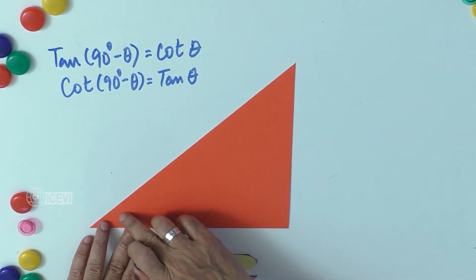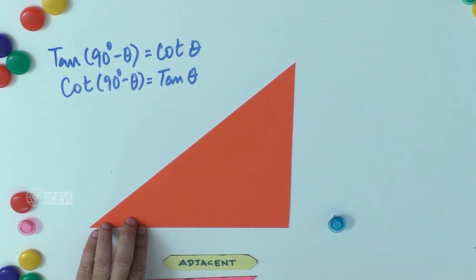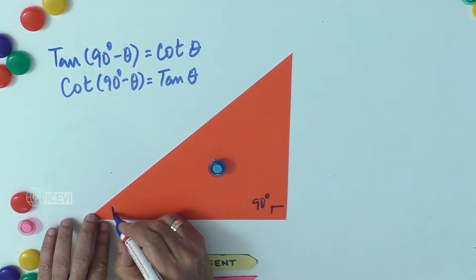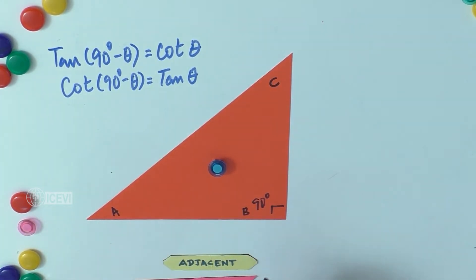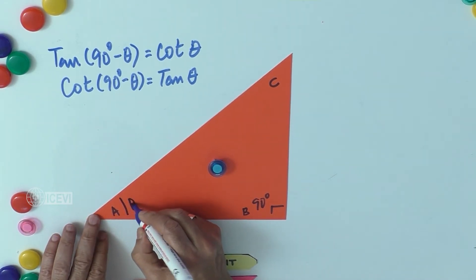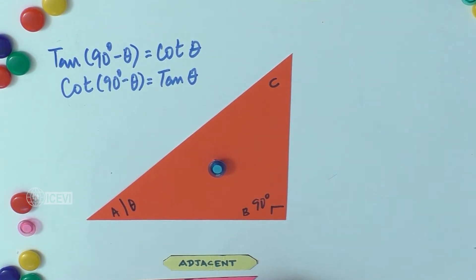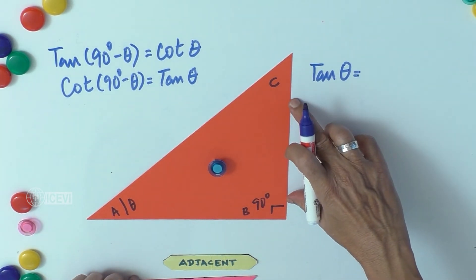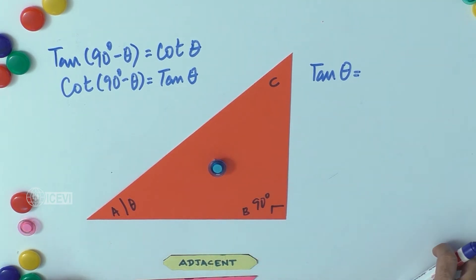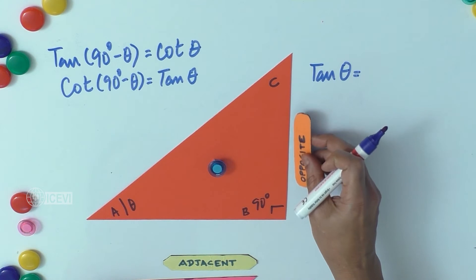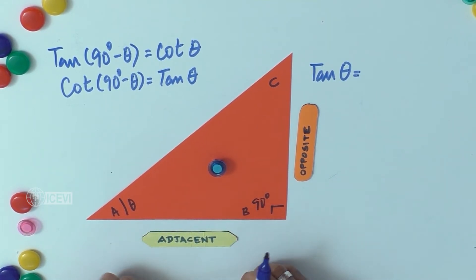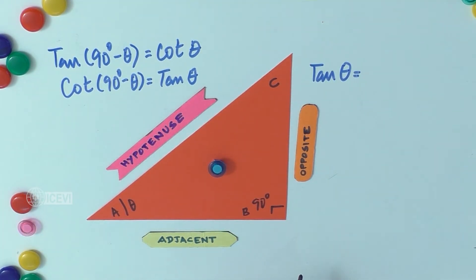Let us take a right angle triangle. We do not know the measurement of these angles except one angle, that is B, where we get 90°. Let us call this triangle ABC and take theta as the reference angle, which is angle A. The side BC is opposite, the side AB is adjacent, and the side AC is the hypotenuse.